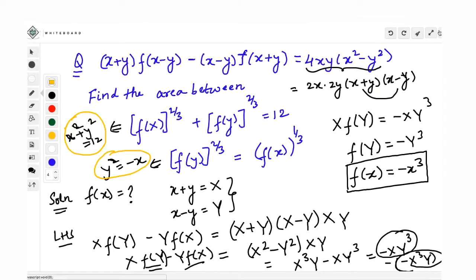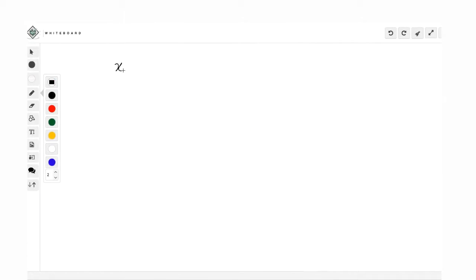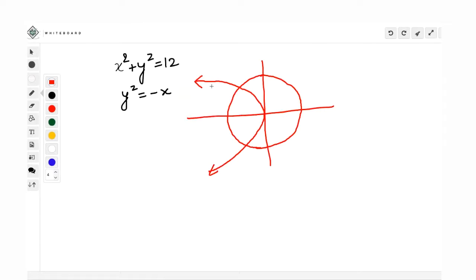Can we do that now? Yes, sir. Do you need any explanation from this present page or should I go to the next page? Can I clear this off? Yes, sir. So, we are now going to find out the area between x square plus y square is equal to 12 and y square is equal to minus x. We are going to get this circle and we are going to get this kind of a parabola. Which area do I need? I need this area.